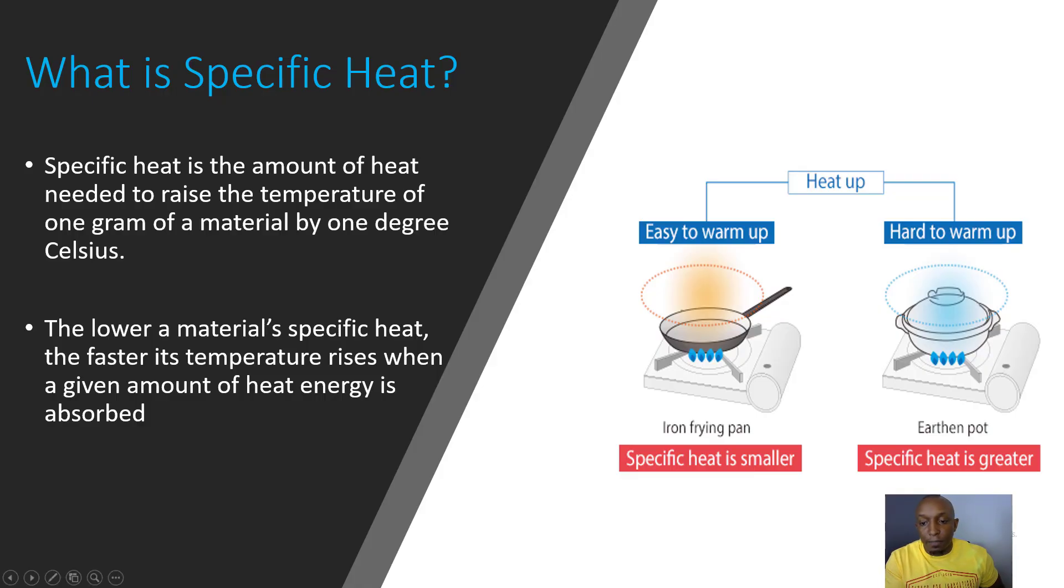For example, we have these two heating materials on top of this stove right here. We have this iron frying pan, then we have this earthen pot, and both of them are being heated up. If you notice, the iron frying pan has a smaller specific heat, which means it's going to heat up much faster and it's going to be easier to warm up. But if you take a look at this earthen pot, it has a greater specific heat, so it's going to heat up much slower and it's going to take longer for it to warm up.